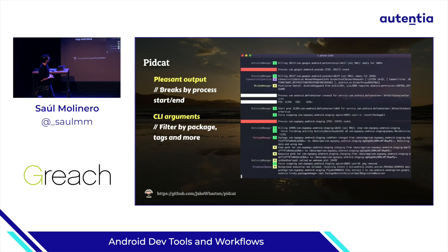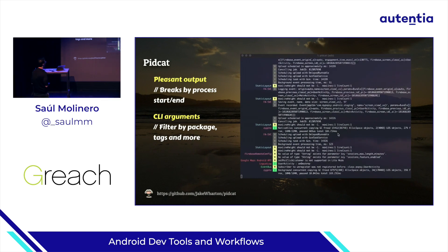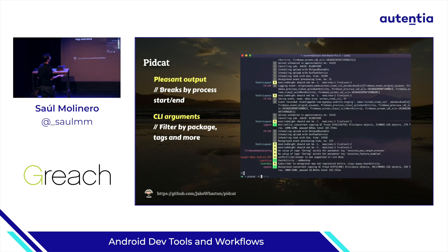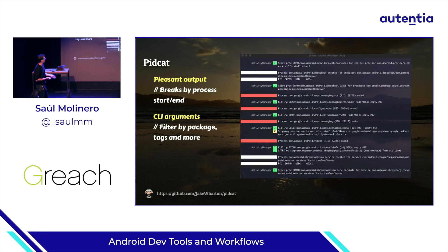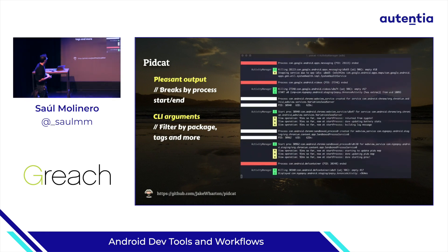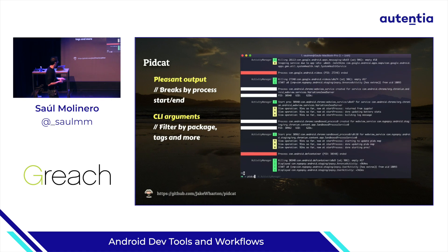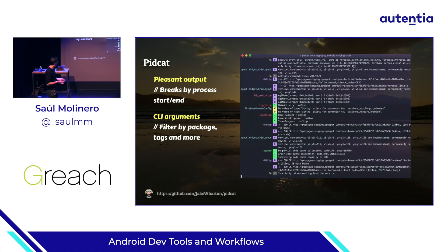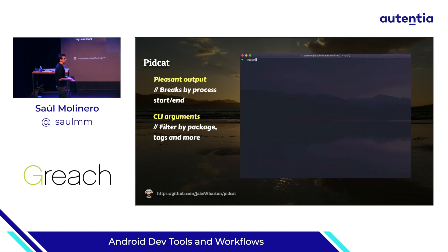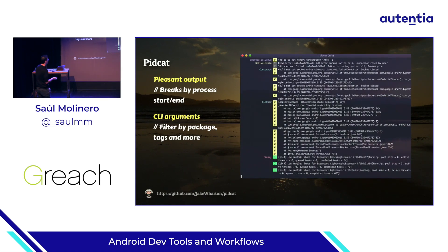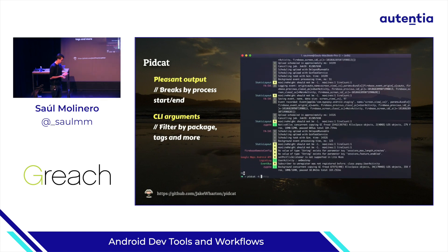The first one is PitCat. PitCat is just a wrapper for the common LogCat that you can check in Android Studio as well. What I like about it is that it formats the output in a pleasant way to read. You can filter by tag, by package, and more. You can install it via Homebrew on Mac. It's on GitHub, and it's made by Jake Wharton.